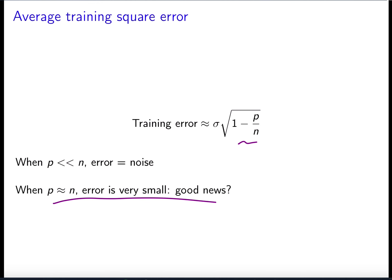The extreme case is when p equals n, where we have zero training error. That makes sense: if y train equals X transpose beta, when n equals p, X is a square matrix and we can invert it to find coefficients that perfectly fit the training data. But that's a horrible thing to do because you know the training data has noise you cannot exactly fit — so you're going to overfit a lot.